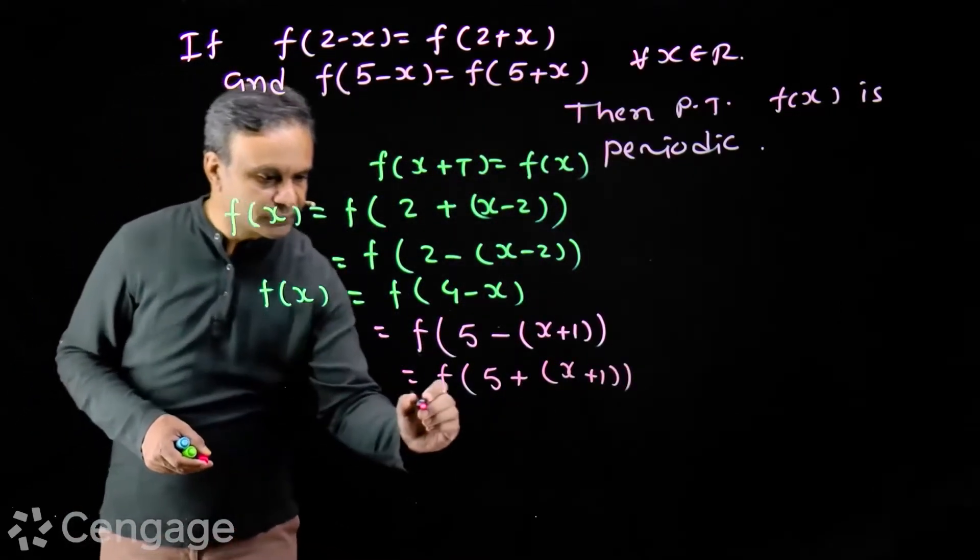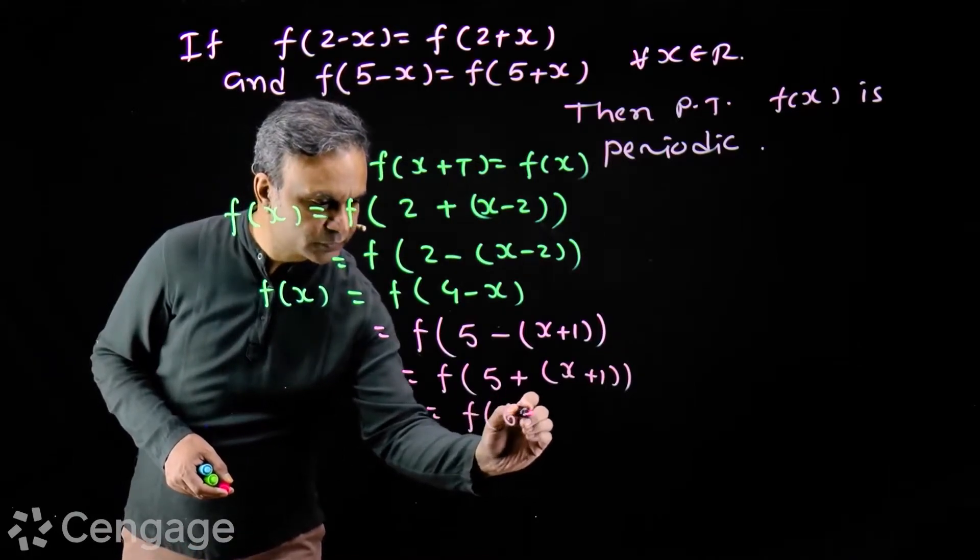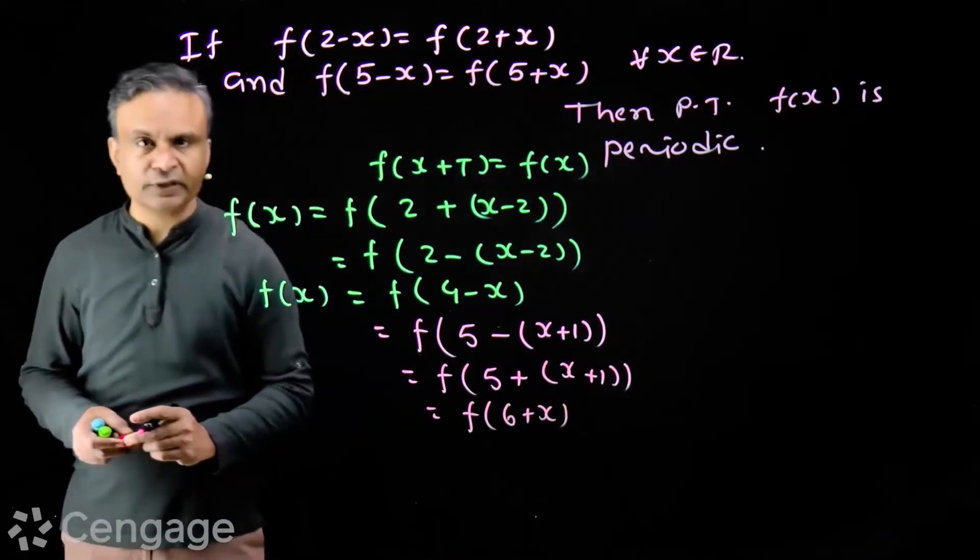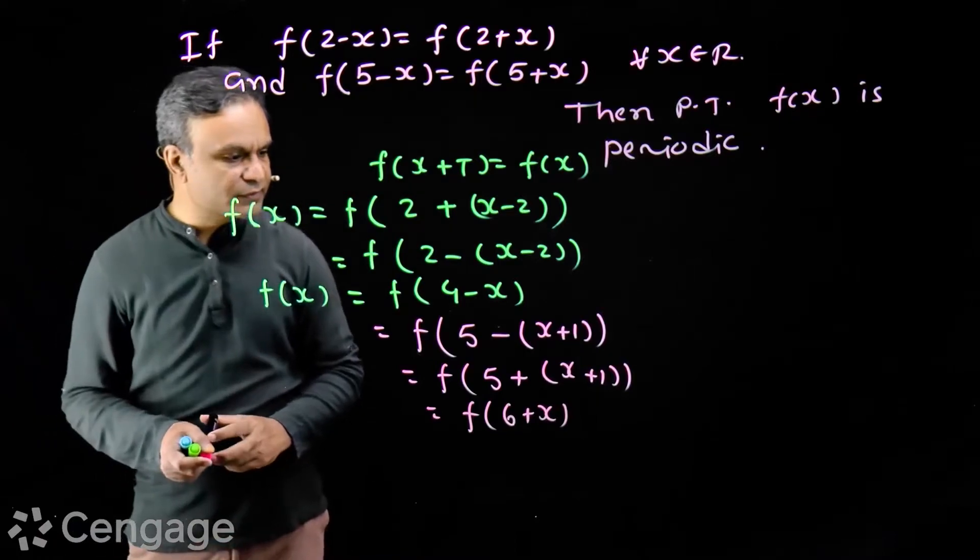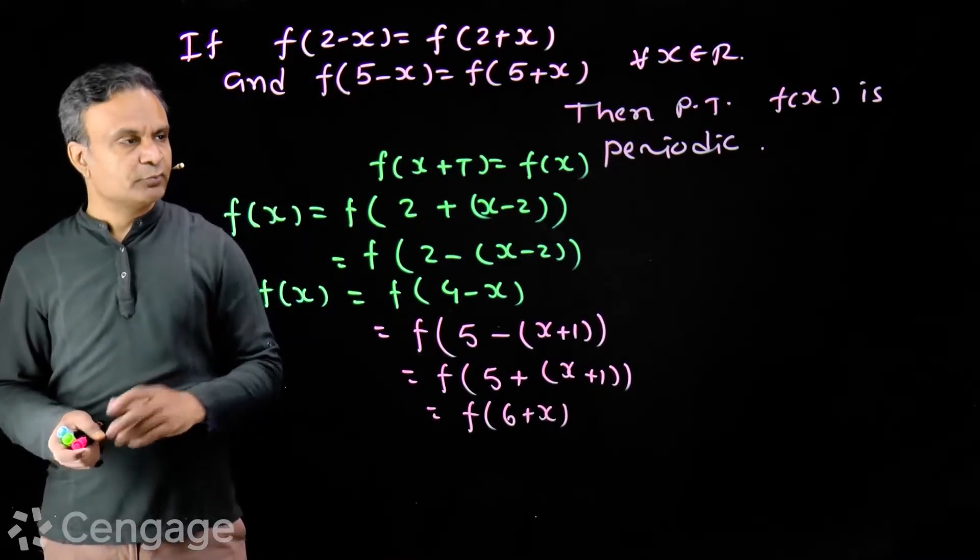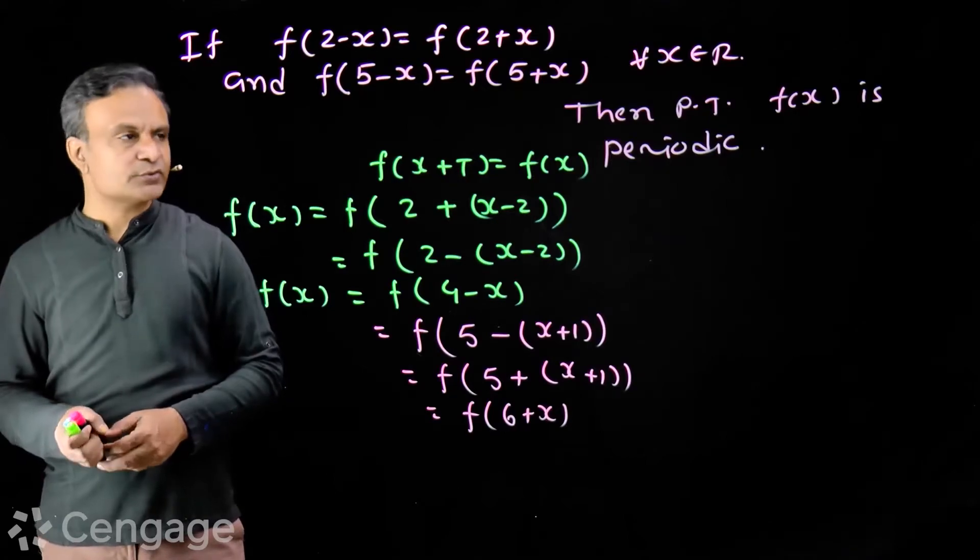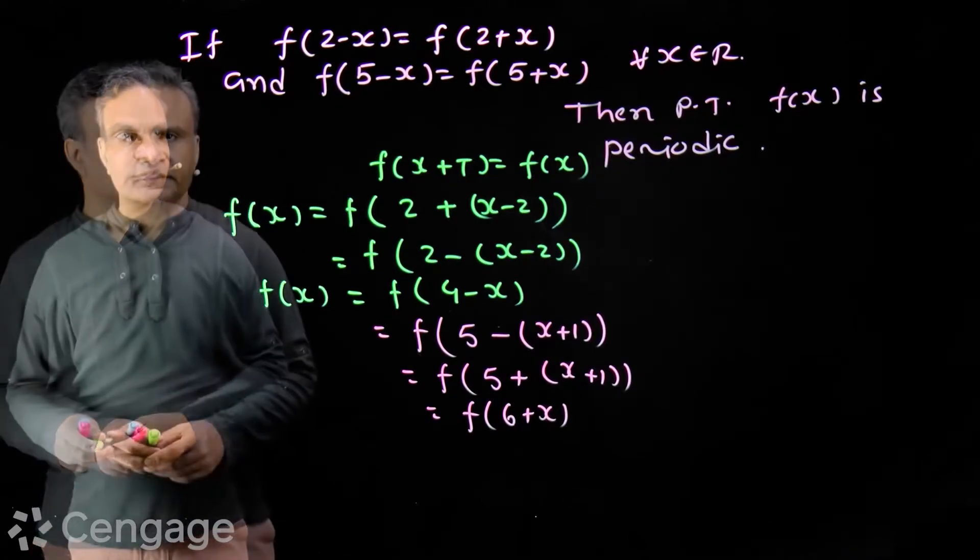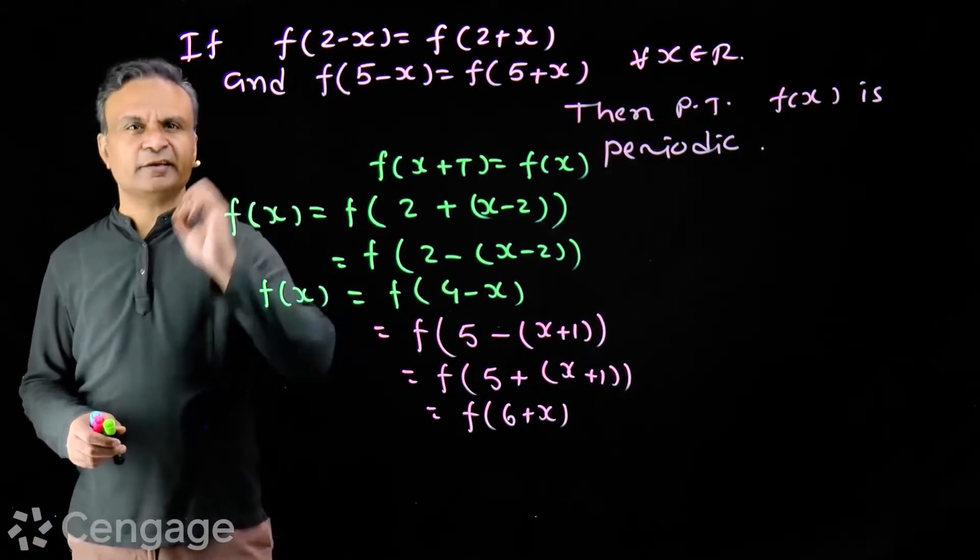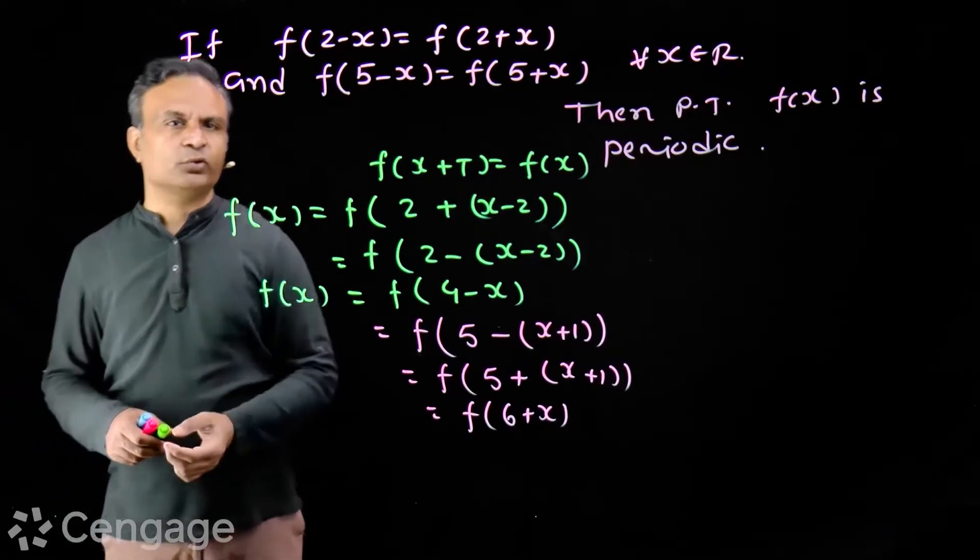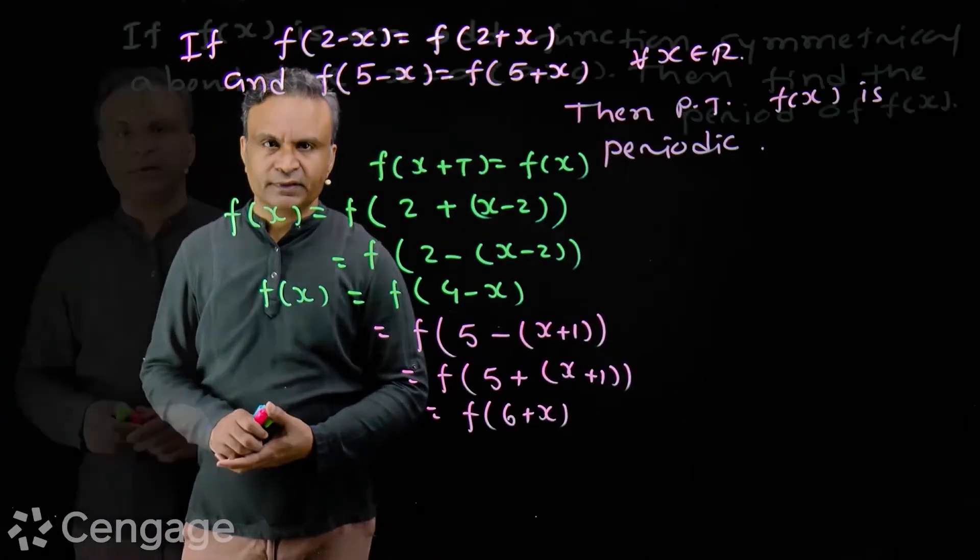This is f(6+x). So function f(x) is periodic and has period 6. We've proved that function f(x) is periodic and its period is 6. We used these two equations very cleverly.